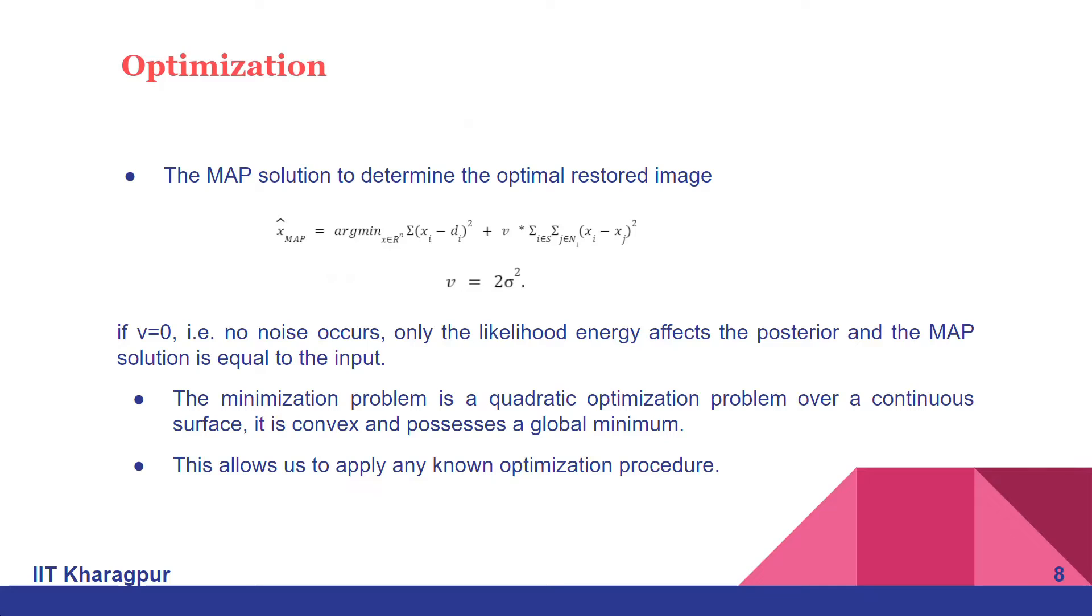It can also be seen that if V equals zero, where there is no noise, what we get is the original image as the output image. Both will be the same—the current image and the original image will be same, which means no noise is present in the image.